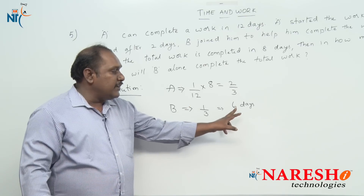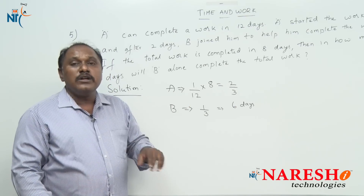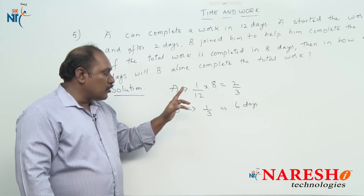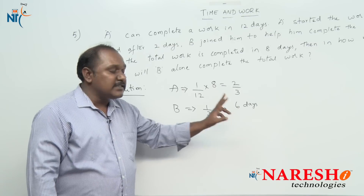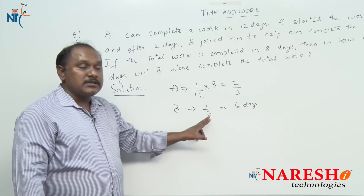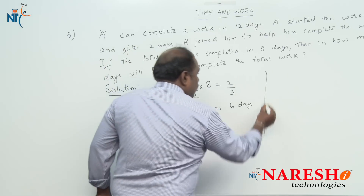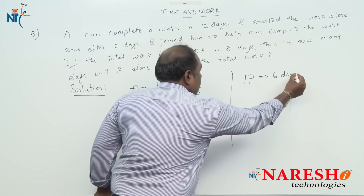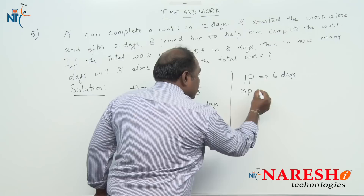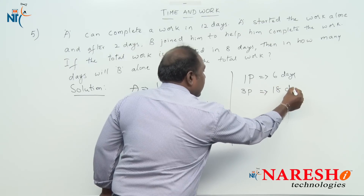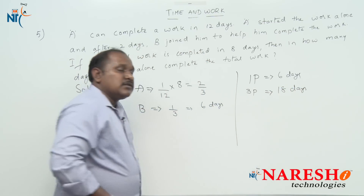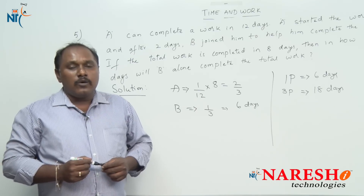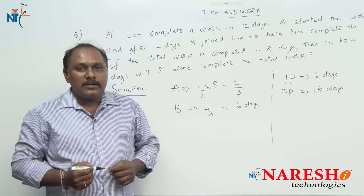B did one third of the work in 6 days — that is, to do 1 part out of 3 parts, he takes 6 days. Since the total work is 3 parts, to do 3 parts he will take 18 days. So B alone will complete the total work in 18 days.